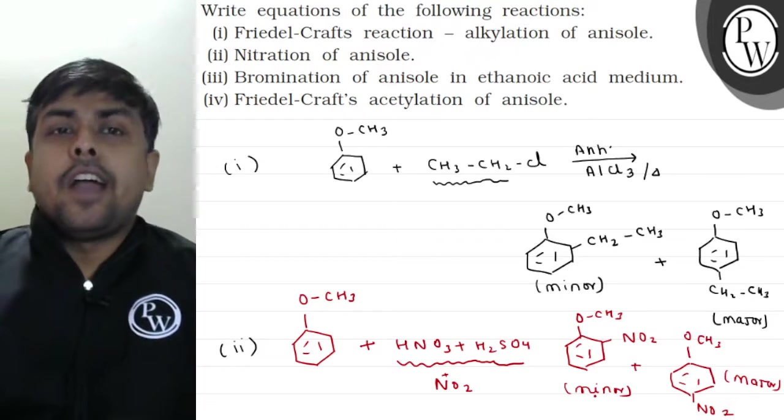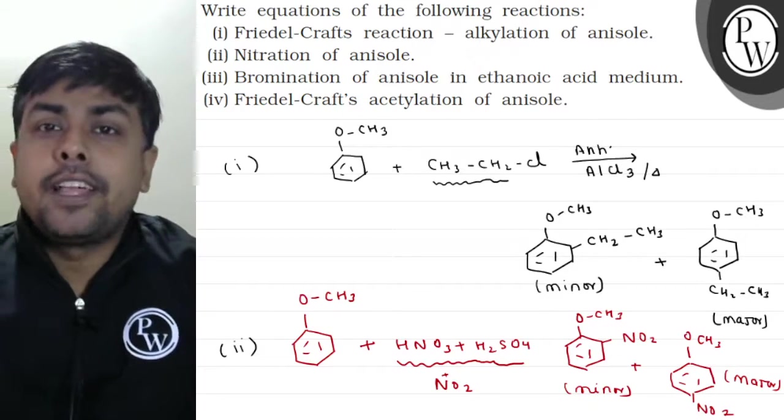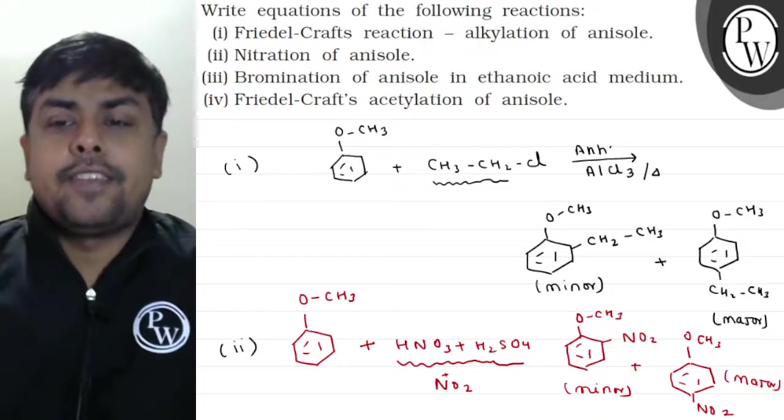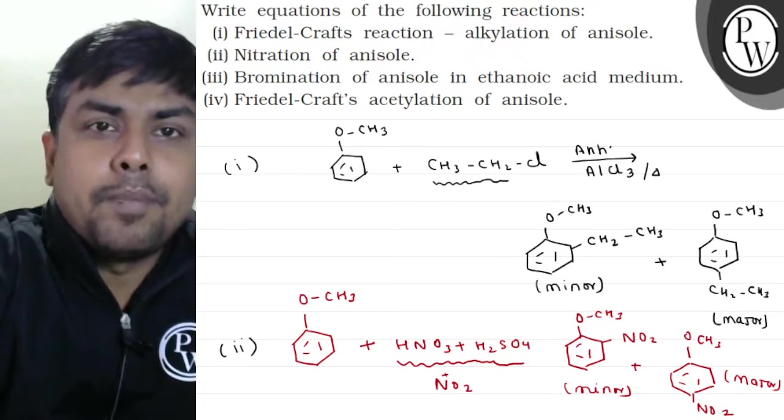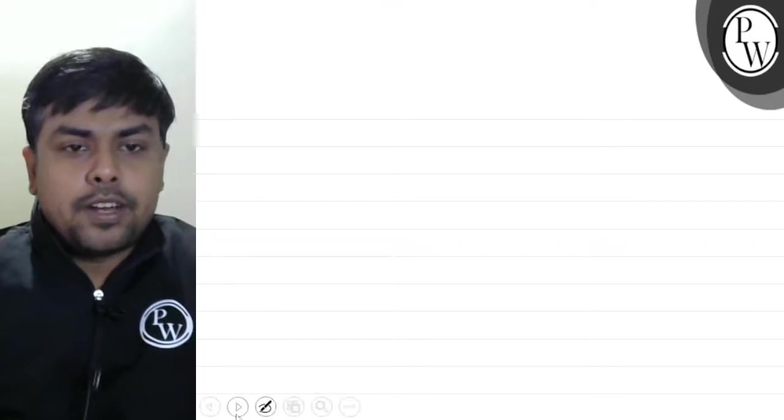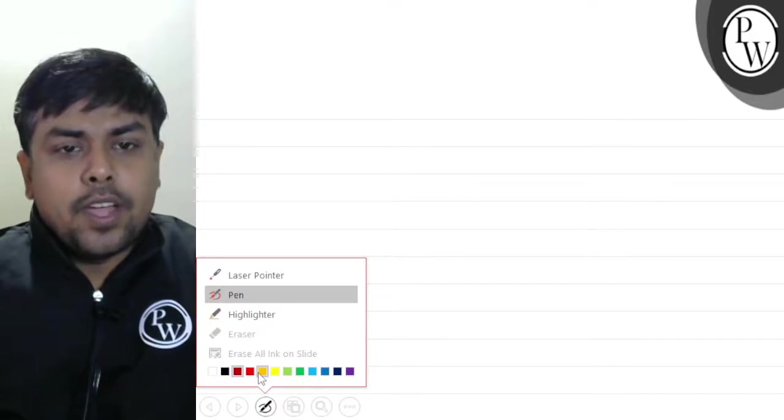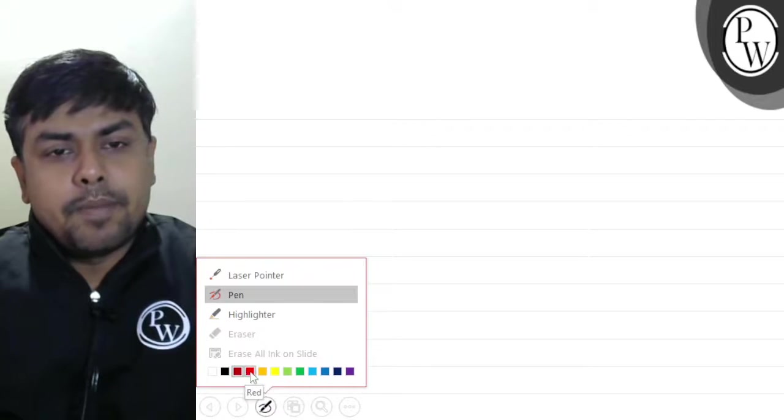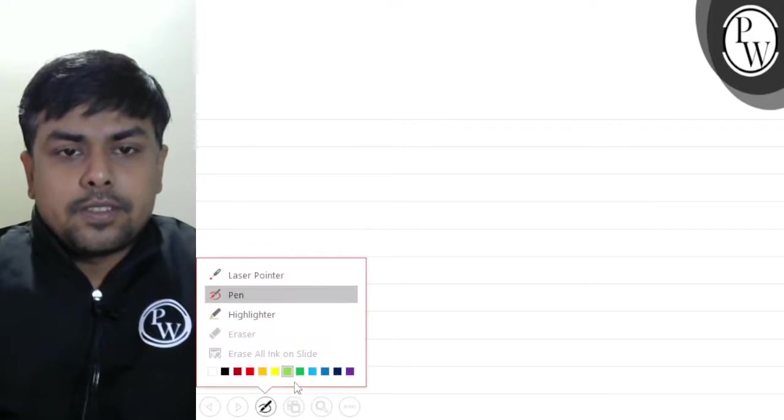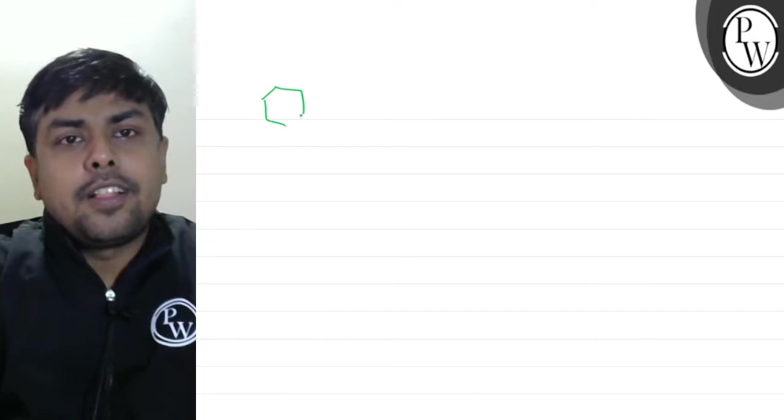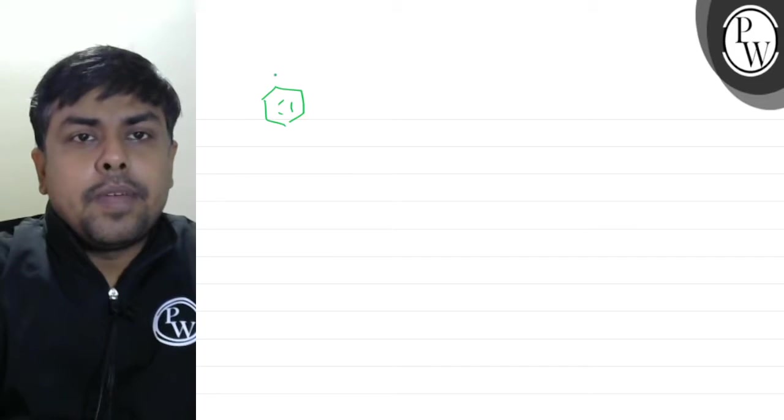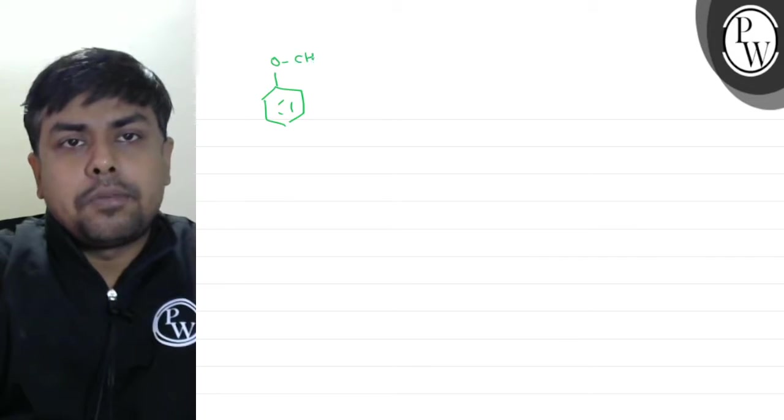Now let's talk about bromination of anisole in ethanoic acid medium. We need to do bromination. My substrate is anisole. Let's talk about the substrate. This is my substrate, anisole. This is my anisole as a substrate.